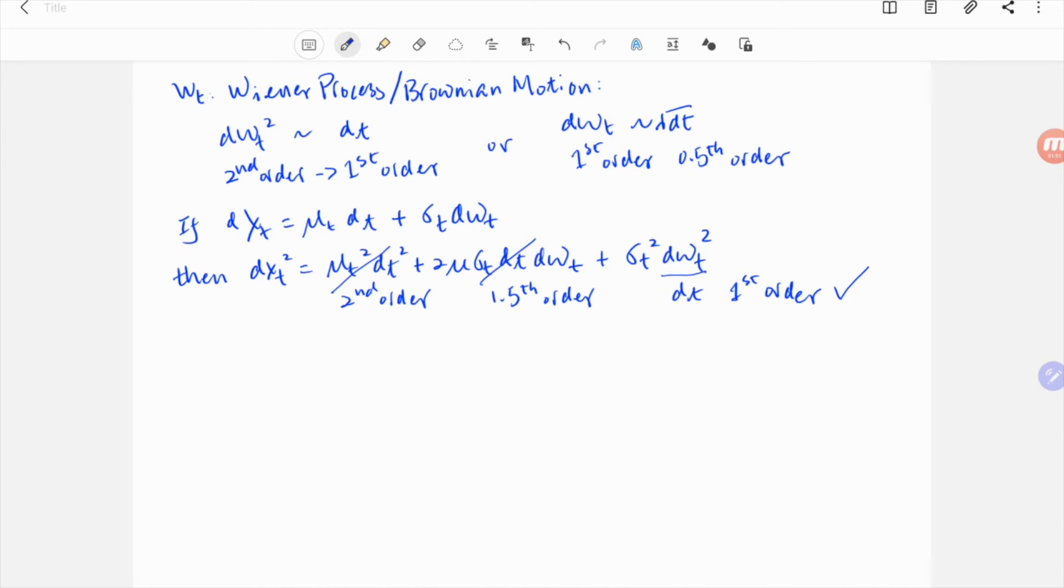We have dxt squared approaches sigma squared dt, and the second order in dxt is first order in dt.